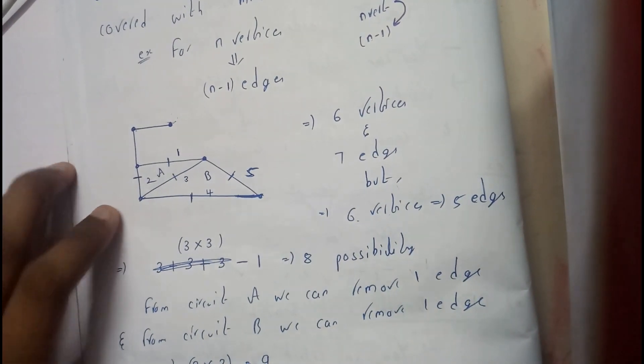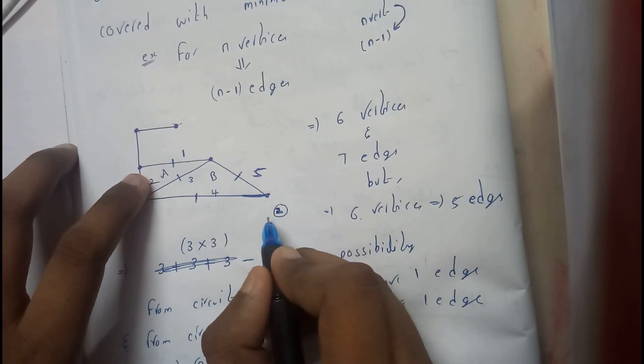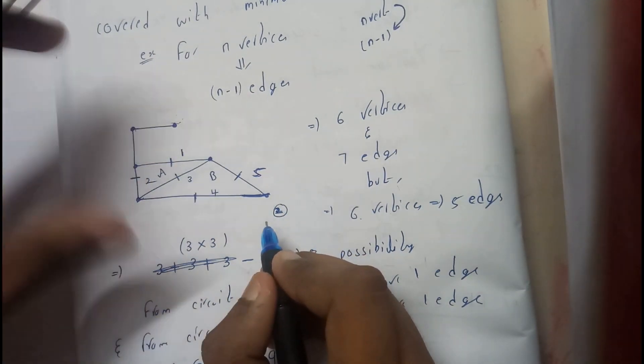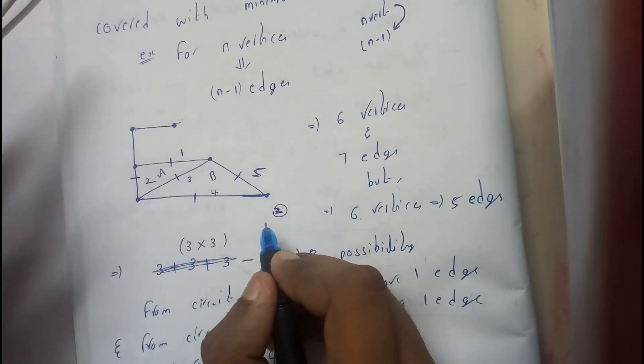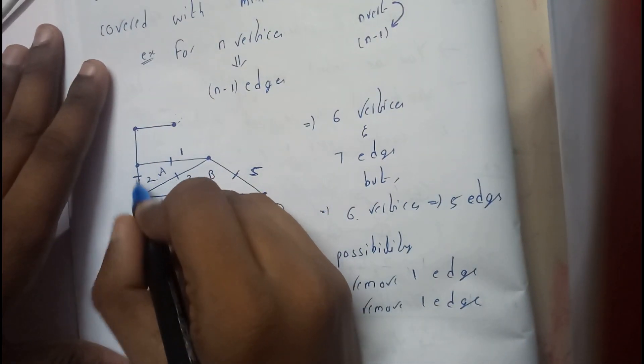So now we need to remove 2 edges at a time, right? Two edges we should remove such that all the vertices are visited and it is a connecting graph.